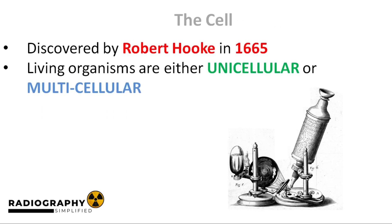Point number seven tells us that cells are of the same chemical composition in organisms of similar species. Now, there would not be a cell theory if Robert Hooke had not discovered cells in the first place. Many decades before the cell theory was formed, Robert Hooke invented the light microscope, which aided the discovery of cells. Down the line, we came to realize that living organisms can be classified based on the number of cells they possess into unicellular and multicellular organisms.